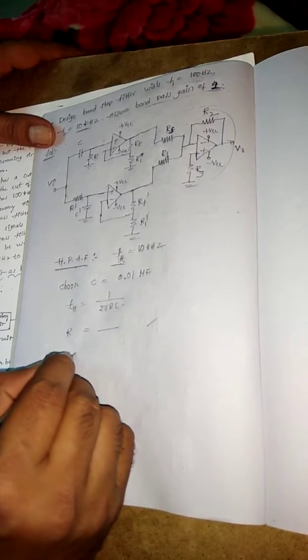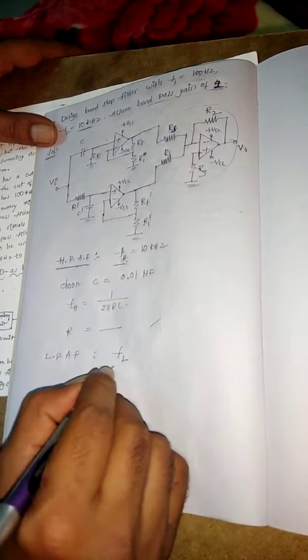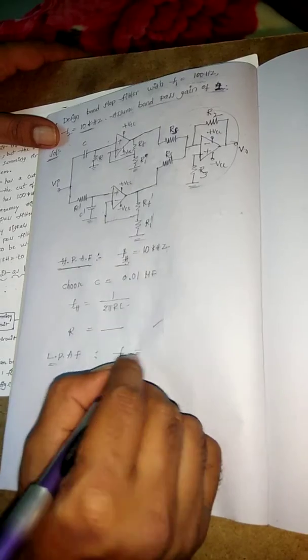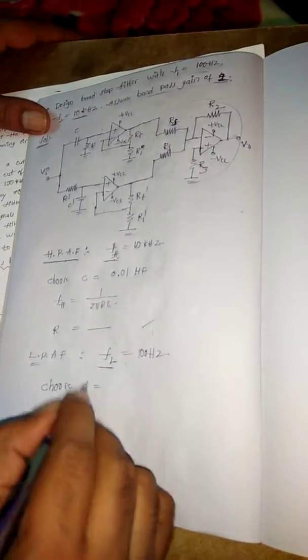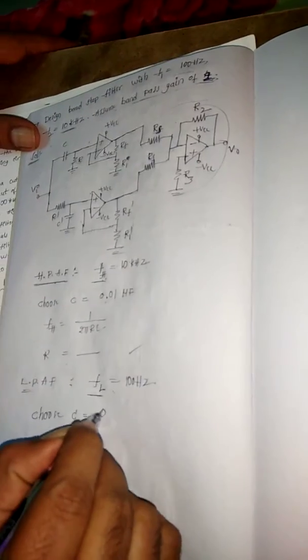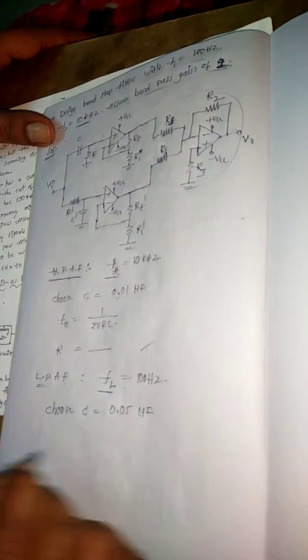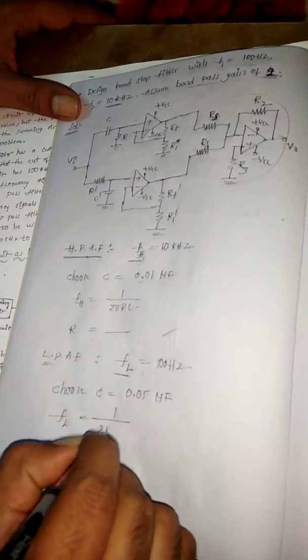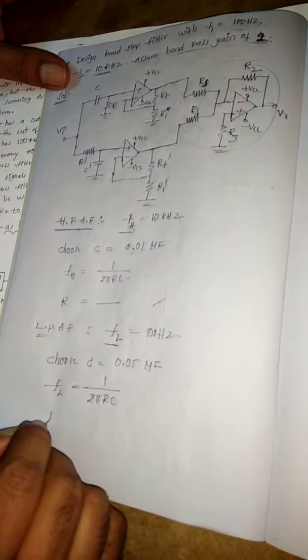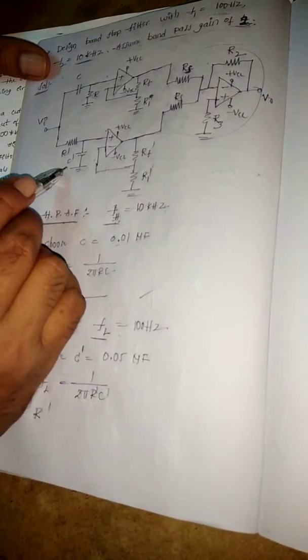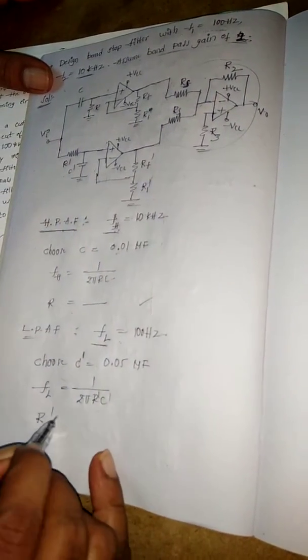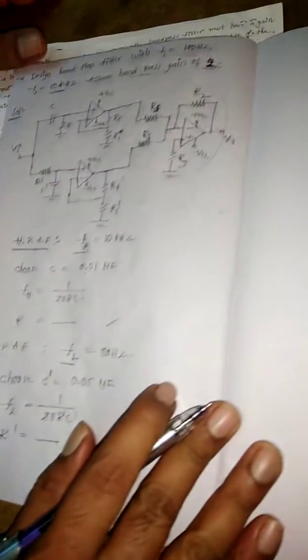Next, go with the low-pass active filter. For this, we select the lower cutoff frequency, which is 100 Hz as given. Choose the capacitor value C' — it should be a maximum value, so choose 0.05 microfarads. Using the formula for lower cutoff frequency: fL = 1 / (2πR'C'), we can find the resistance R'. Choose the standard value of R' accordingly.